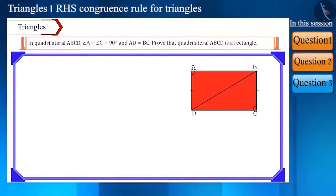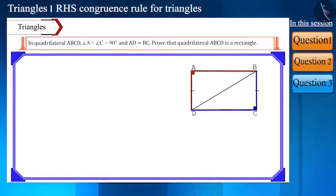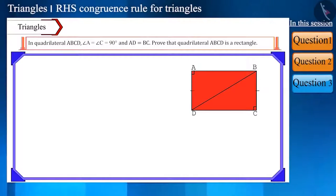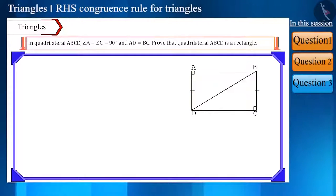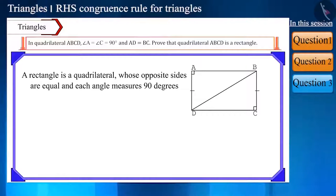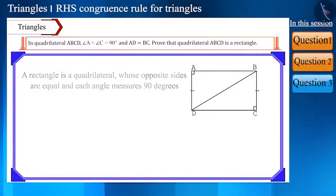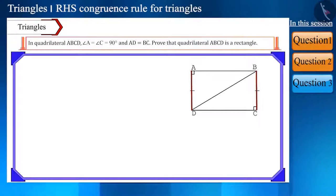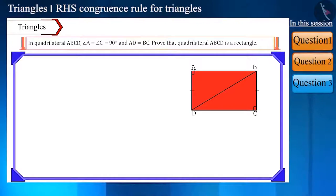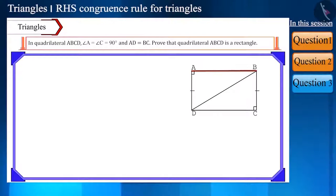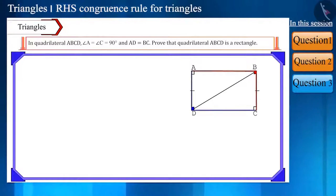In quadrilateral ABCD, the measurement of angle A and angle C is 90 degrees, and side AD is equal to side BC. Prove that quadrilateral ABCD is a rectangle. Friends, a rectangle is a quadrilateral whose opposite sides are equal and each angle measures 90 degrees. It's given that side AD is equal to side BC, and angle A and angle C are right angles. ABCD will be a rectangle if we can prove that side AB and side DC are also equal, and angle B and angle D are right angles. So let's start.